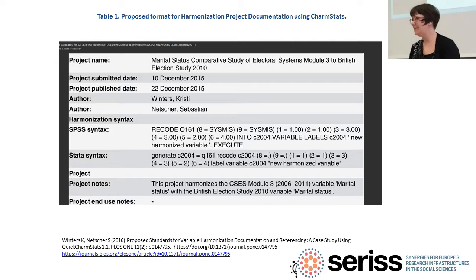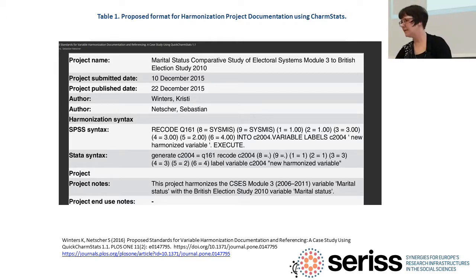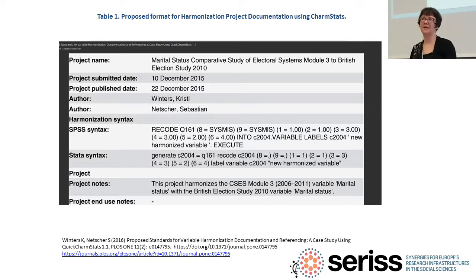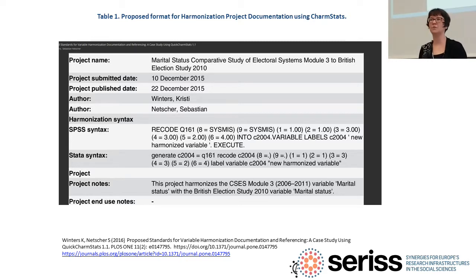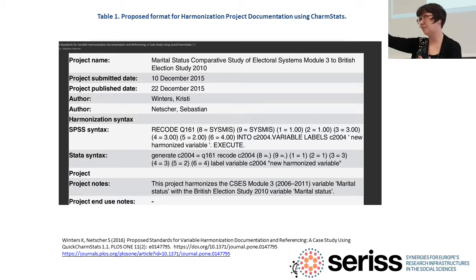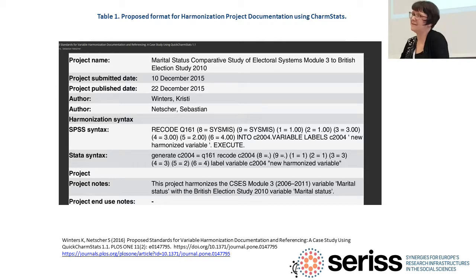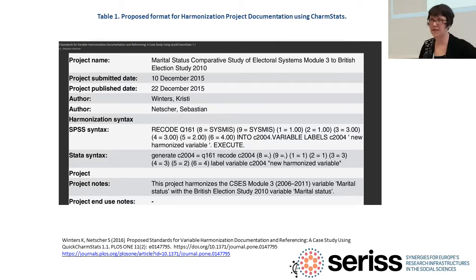We generated this report at the end. The thing about the report generator is that it's a blank template — you can reorder the information and how it's pulled. In this case we thought researchers are most interested in the recoding text, less in the story about which study it was and the question wording, since they're stuck with the questions from BES. We decided to give the project name the most prominent place, the submission and publication date, the authors, and then we provide the syntax in both SPSS and Stata. If you had the BES and CSES datasets, you could run this code and combine them for more comparative election study analysis.